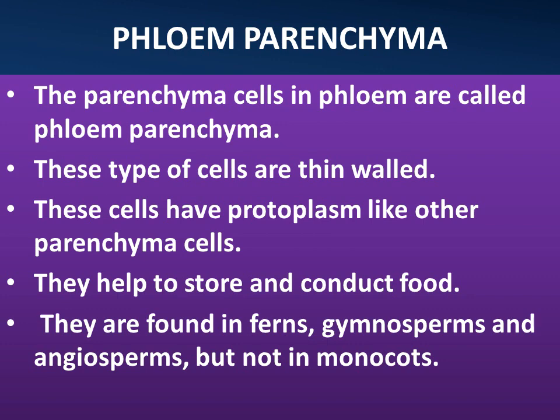Phloem parenchyma: the parenchyma cells in phloem are called phloem parenchyma. This type of cells are thin-walled and have protoplasm like other parenchyma cells. They help to store and conduct food. They are found in ferns, gymnosperms and angiosperms, but not in monocots.